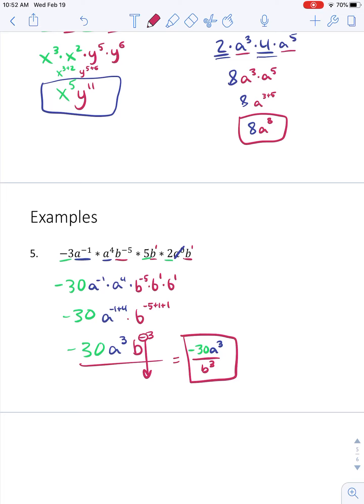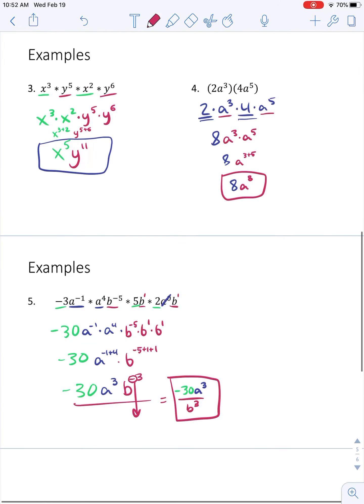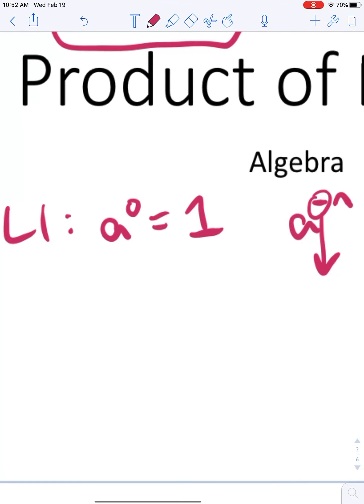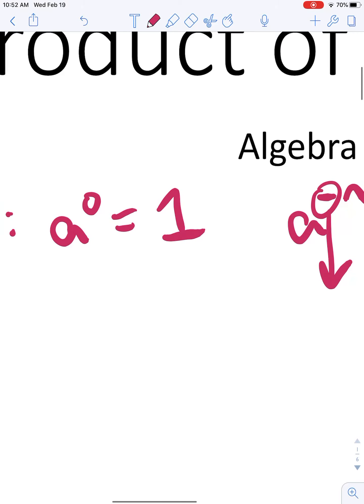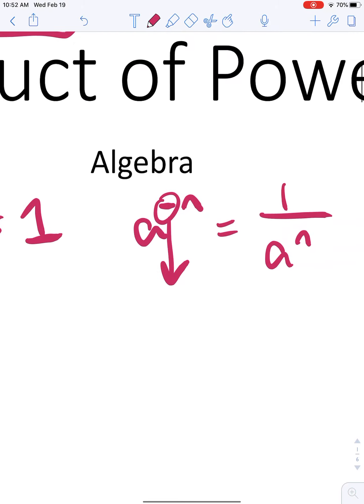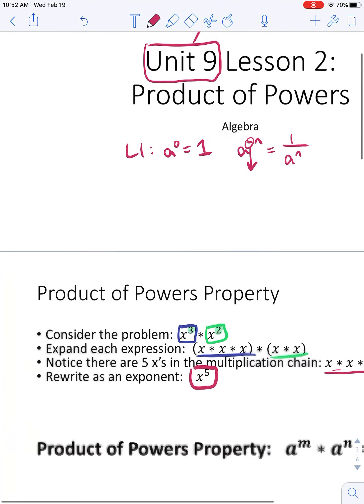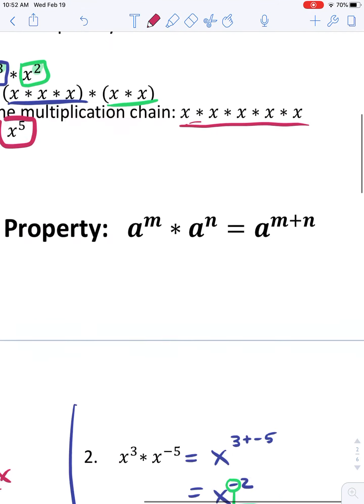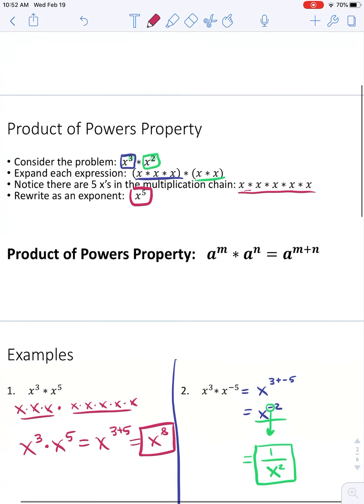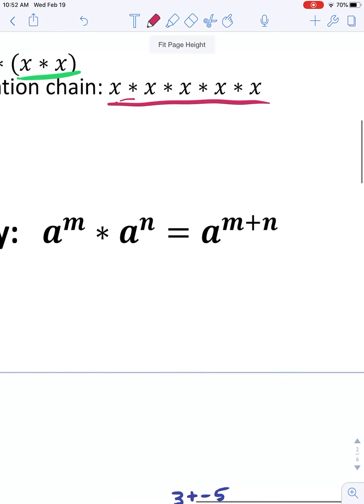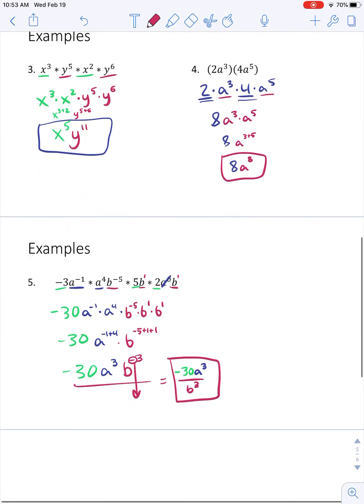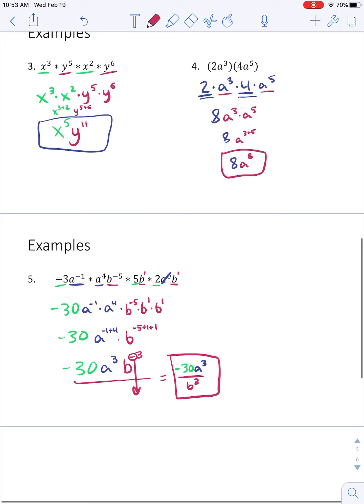But remember now we have three properties that we just need to look for. We have, from up top, we have the 0 property, which is a really nice one. It just turns whatever we have to the 0 power into a 1. We have the negative property, which moves things to the other side of the fraction. And then today we learned the product of powers property, which sometimes I call the addition property. It says that if the bases match, you can add the exponents. And we use those through these different examples.